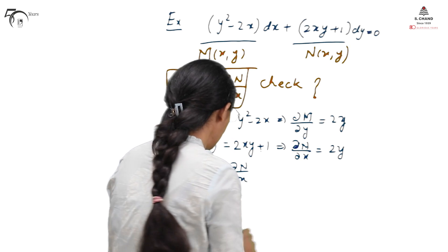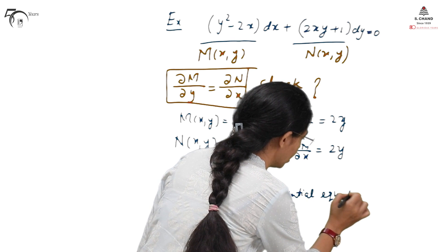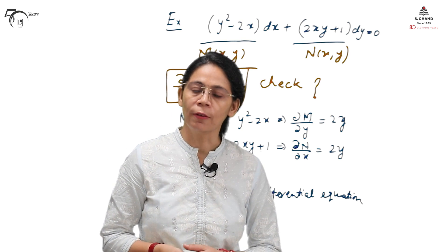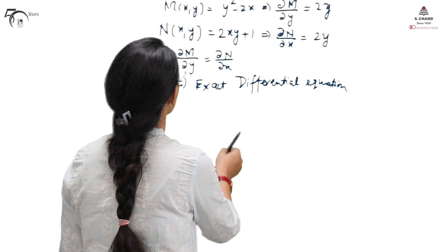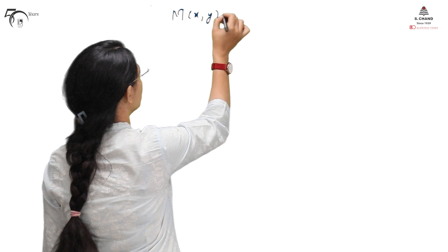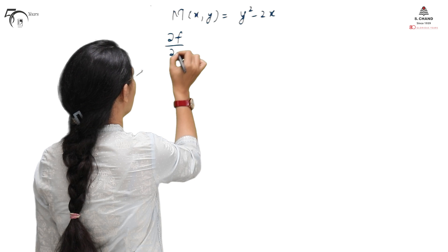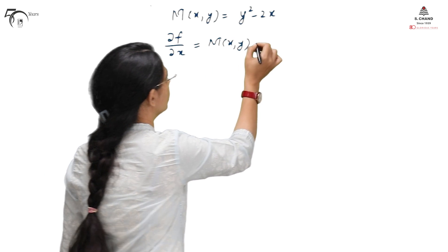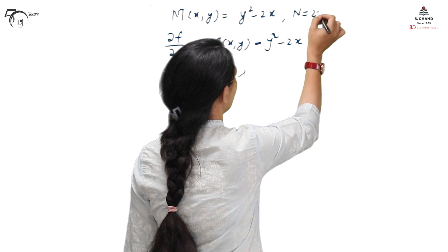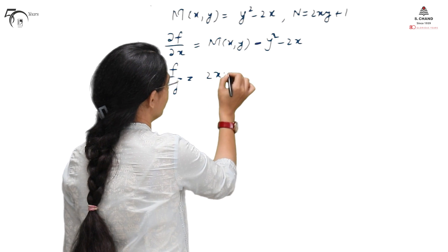Since the exactness condition is satisfied, the given differential equation is confirmed as exact. The first step — checking exactness — is done. Next we find the solution. We take M(x,y) = y² − 2x and need to find a function f such that ∂f/∂x = M(x,y) = y² − 2x. This is equation 1. Also, since N = 2xy + 1, we need ∂f/∂y = 2xy + 1. This is equation 2.